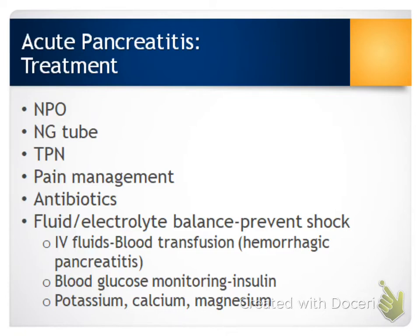If we're looking at prolonged NPO status, we need to provide some type of nutrition — that would be TPN, total parenteral nutrition, given intravenously until the patient can begin eating again. They may get antibiotics and may need blood transfusions if there is bleeding. We're also watching blood glucose levels and monitoring for electrolyte imbalances — specifically potassium, calcium, and magnesium.